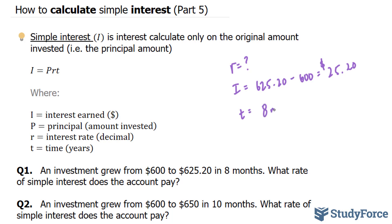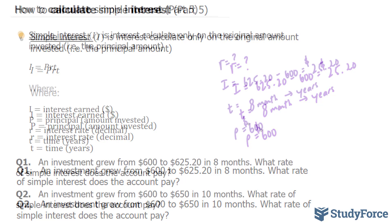Now we can't use 8 months because the formula works on a yearly basis, so we're going to need to convert this into years. The principal here is $600, and that's how much was initially invested.